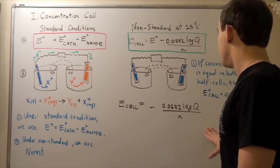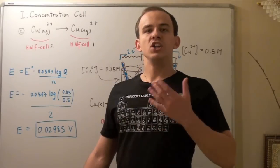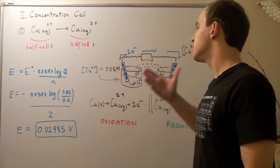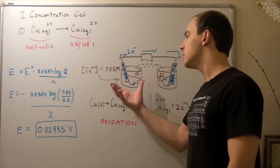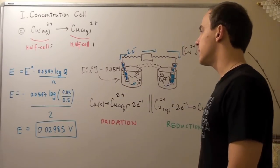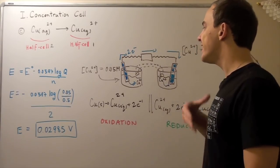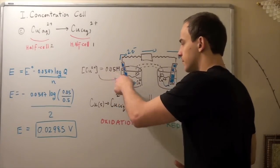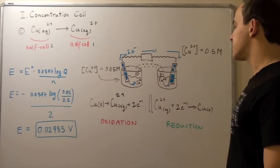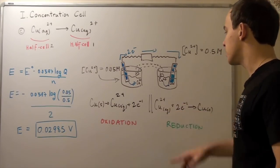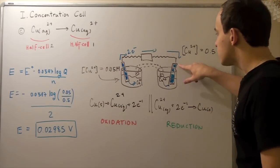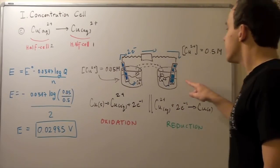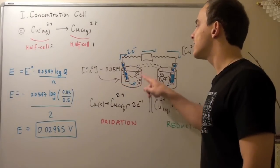Let's look at an example. Suppose we have the following electrochemical setup with two half-cells. In half-cell number one, oxidation of solid copper takes place — the electrode is solid copper, and the initial concentration of aqueous Cu²⁺ in Beaker 1 is 0.05 molar. In half-cell number two, reduction of copper takes place, and the electrode is also copper solid, but the concentration is 0.5 molar. So Beaker 2 is more concentrated and Beaker 1 is more dilute.